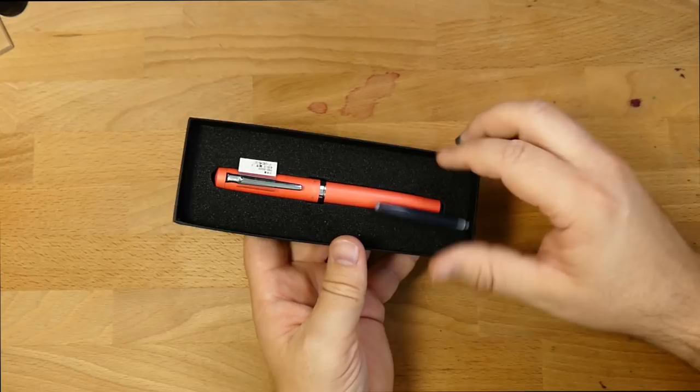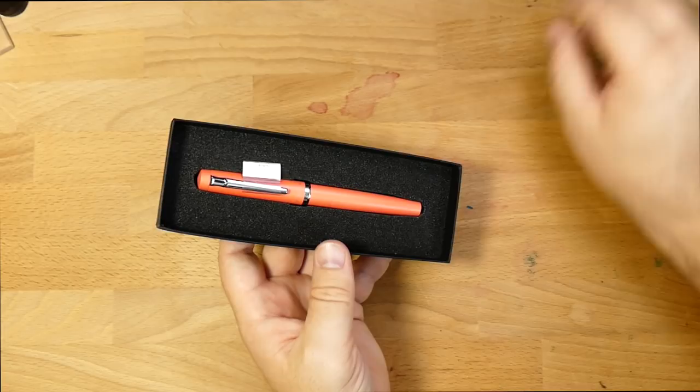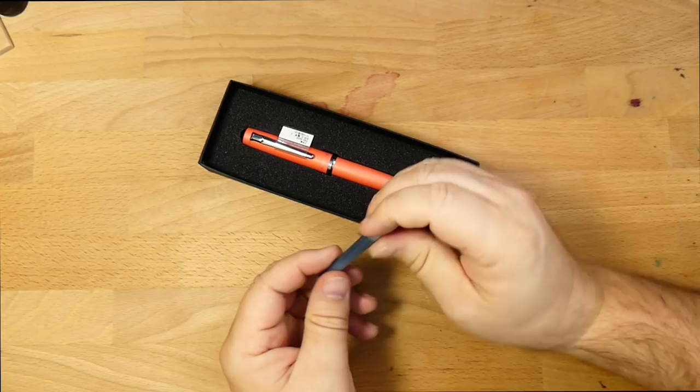This is the Platinum instruction manual about how to install cartridges and use the converters and all that kind of stuff. Let's get all this paraphernalia out of the way. This is the blue ink cartridge that it comes with, and I've actually got one of these in the pen right now. They gave me an extra, which is awesome because I use a lot of Platinum pens, and you can never have too many of these little cartridges.